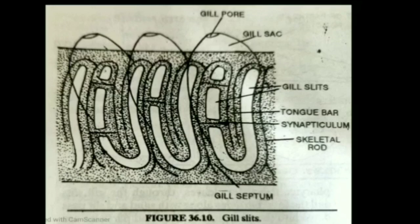Gill slits and branchial sacs together make up the respiratory system of Balanoglossus. The entire gill slits are covered by cilia — they have ciliated epithelium. These cilia beat to set up a current of water. Water enters through the mouth, goes to the pharynx, and passes through the respiratory chamber. The food chamber and respiratory chamber are separated by the parabranchial ridge. Water passes over the gill slits, where gas exchange occurs due to well-developed capillaries.